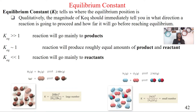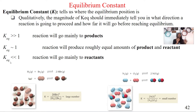If we have a small number for K — smaller than 1 — that's going to let me know that my reaction is mainly going towards the reactants, going to the left. Small K means reactants; big K means products.